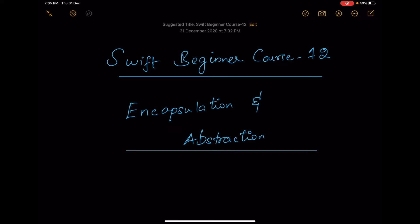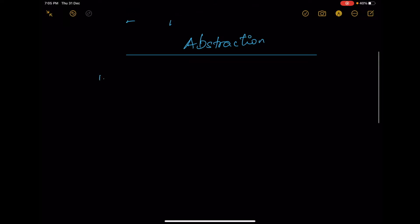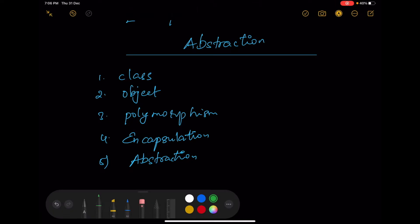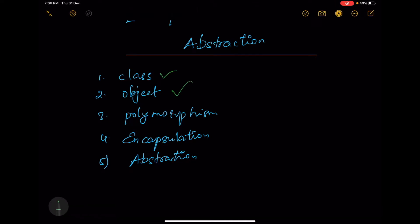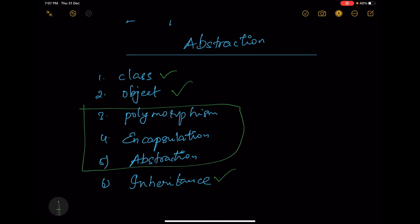Hey guys, welcome to the next session in my Swift beginner course. In this session we are going to look into encapsulation and abstraction. We have OOP concepts like: one - class, two - object, three - polymorphism, four - encapsulation, and five - abstraction. We already covered class, object, and inheritance. So the remaining things are polymorphism, encapsulation, and abstraction - these are the three things we are going to look into today.